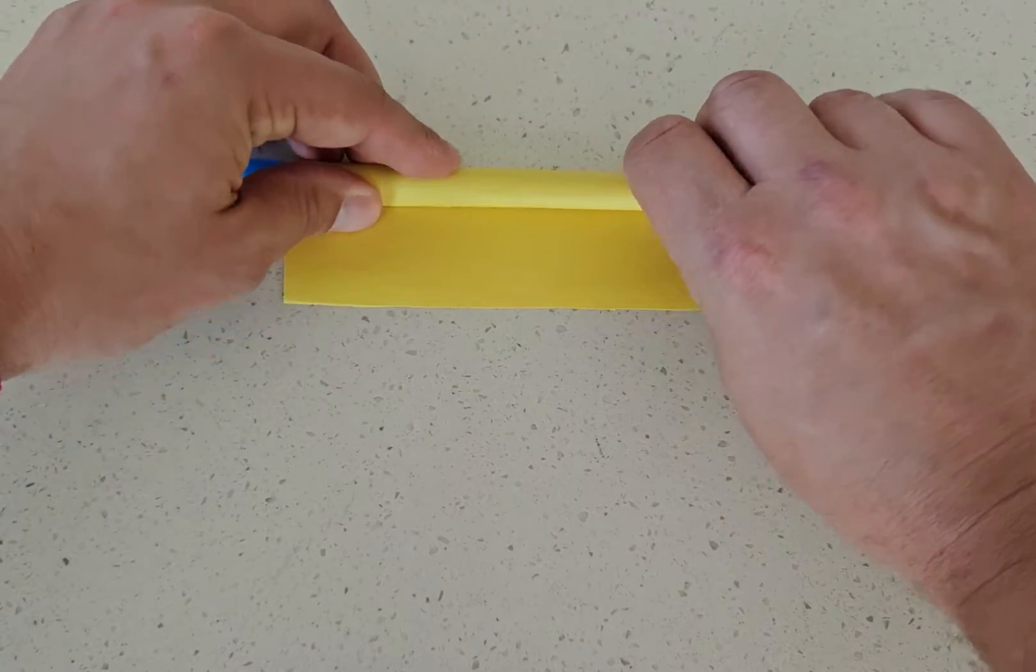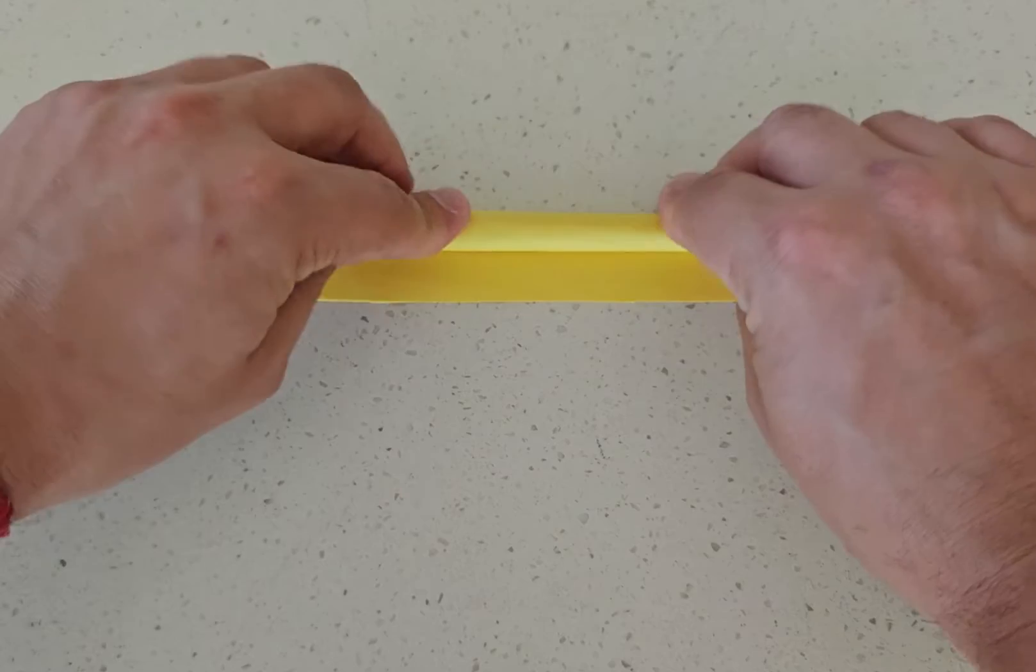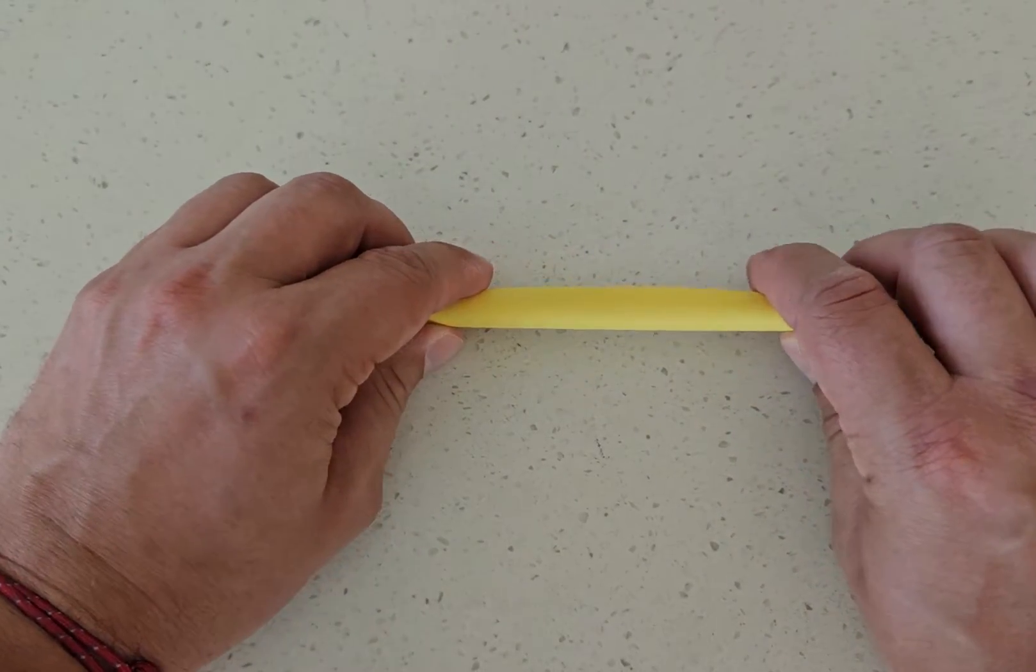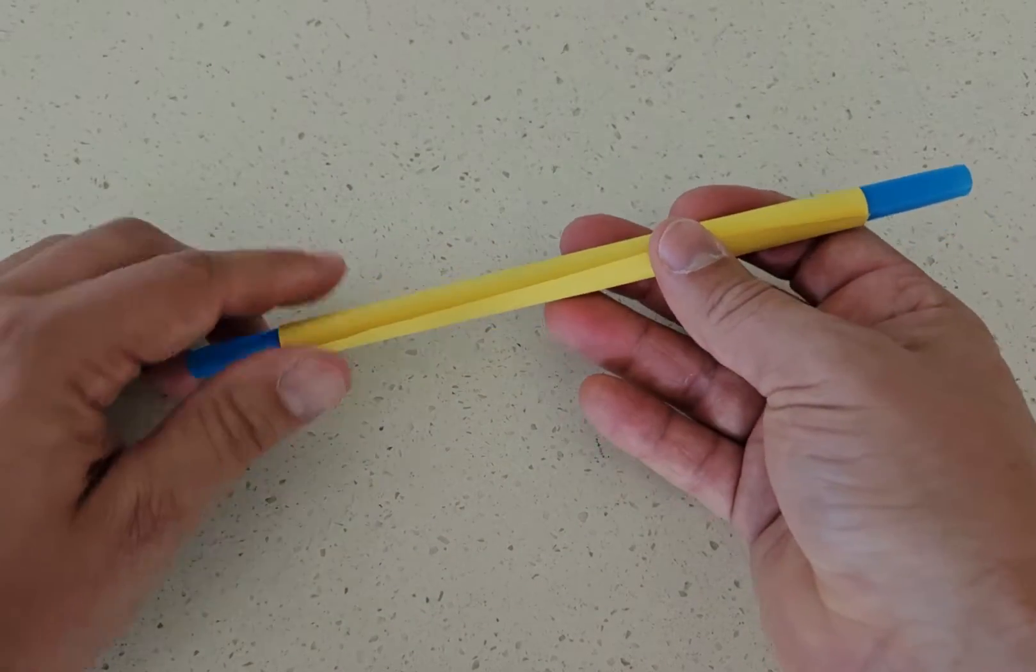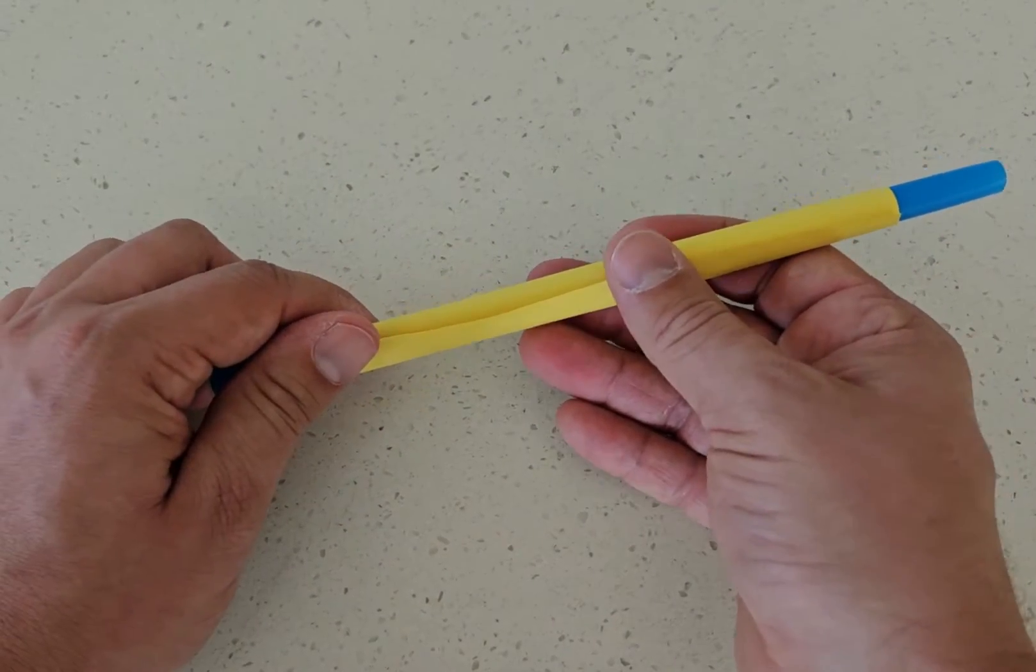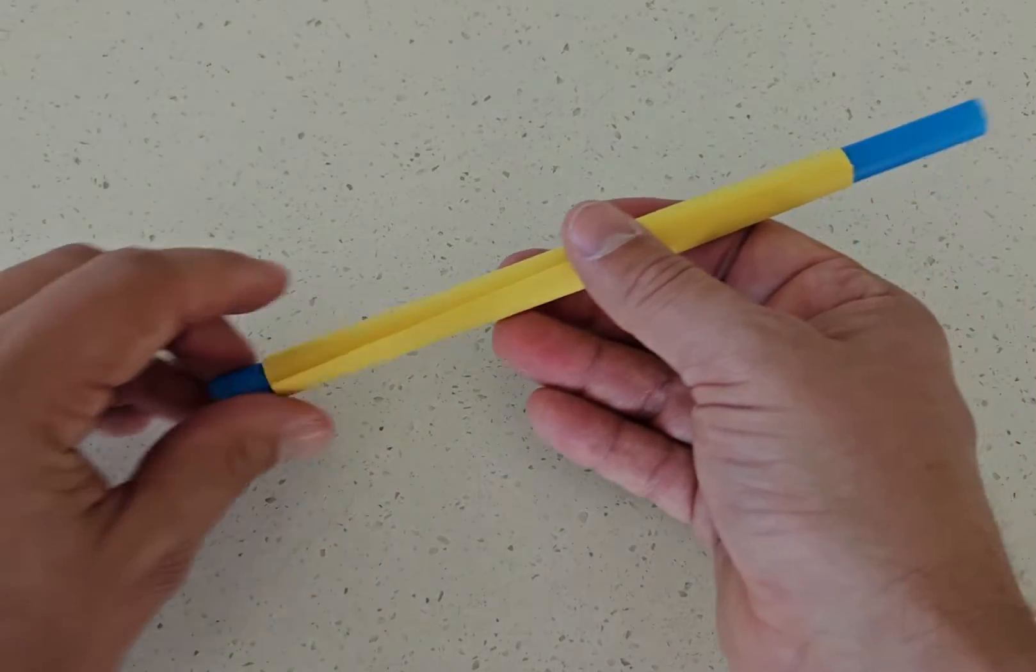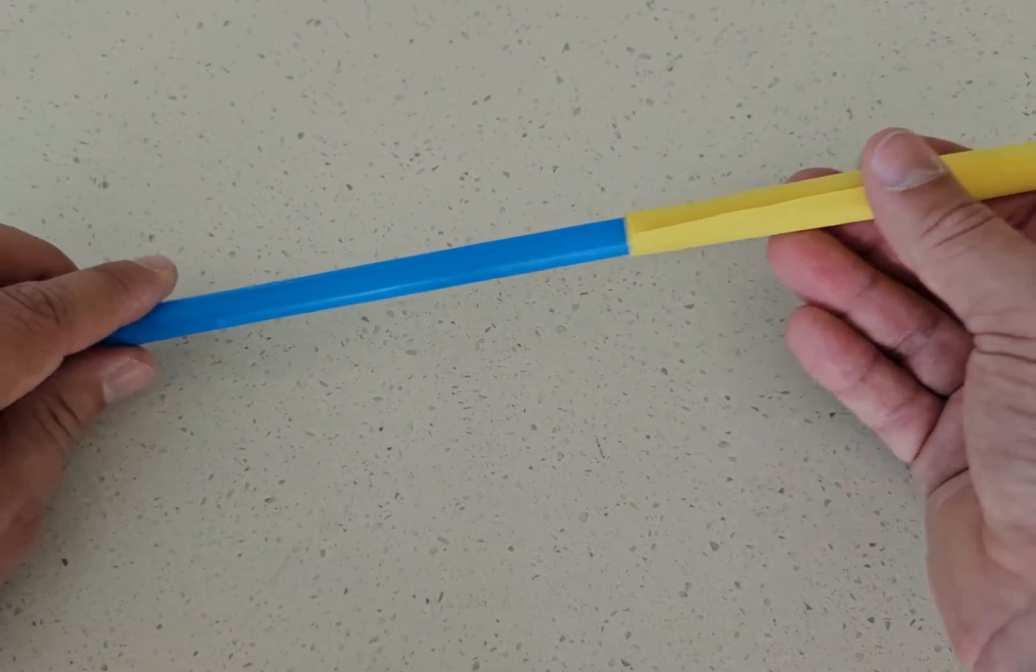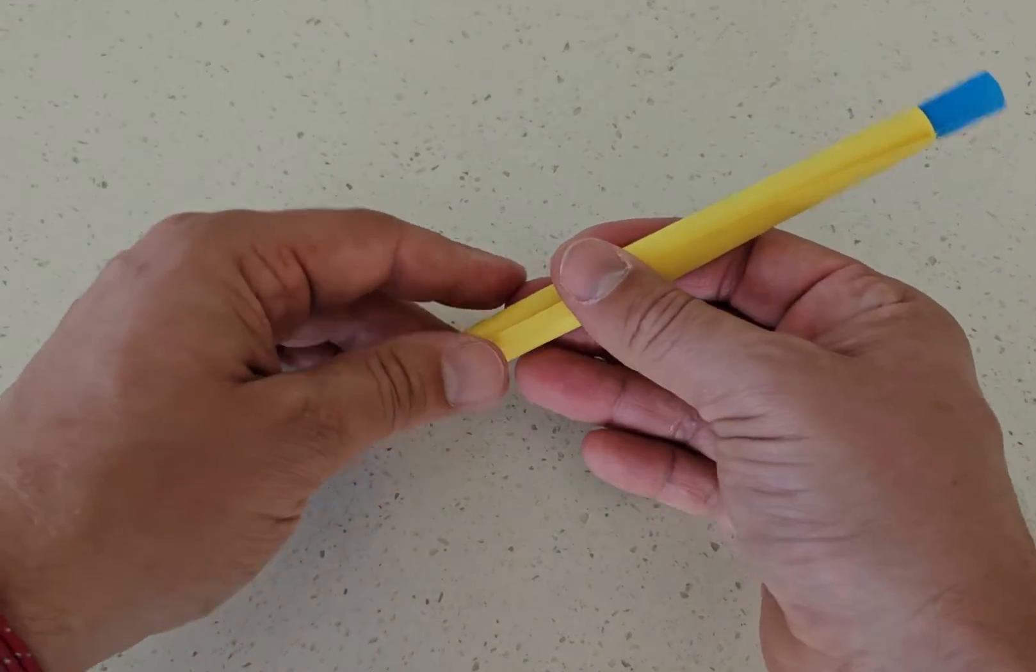Just like that. Now I have this done. One thing I want to do is make sure that it still slides on and off my straw, because if it doesn't, that means I rolled it a little bit too tight. So take it off and see if you can put your straw back in. If you can't, you rolled it too tight, so go ahead and re-roll it.